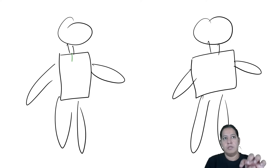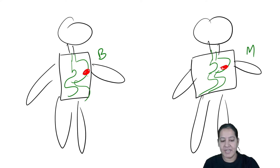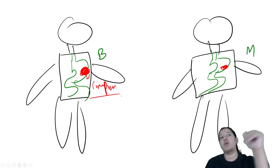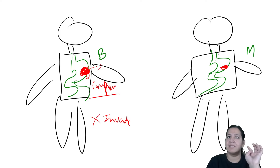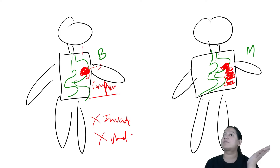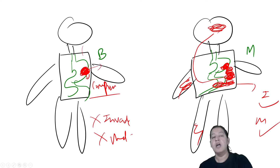To summarize: a benign tumor in the stomach will enlarge but will not spread — no invasion, no metastasis. A malignant tumor will invade locally in continuity to pancreas, liver, spleen, and intestine, and will also spread via blood vessels to brain, bones, and lungs — that is metastasis. Metastasis is the surest sign of malignancy; invasion is the second surest sign. Both are absent in benign tumors.